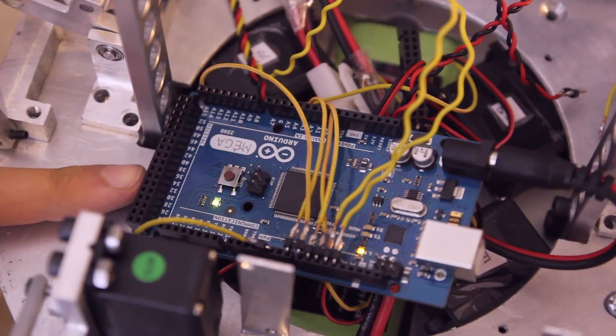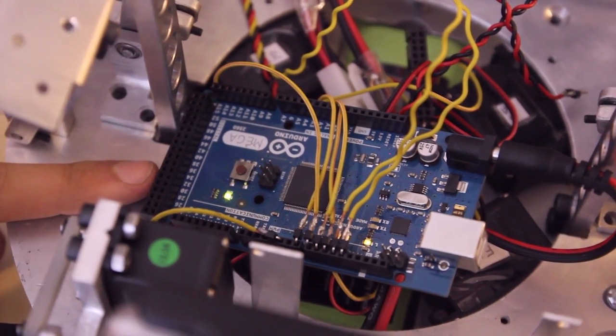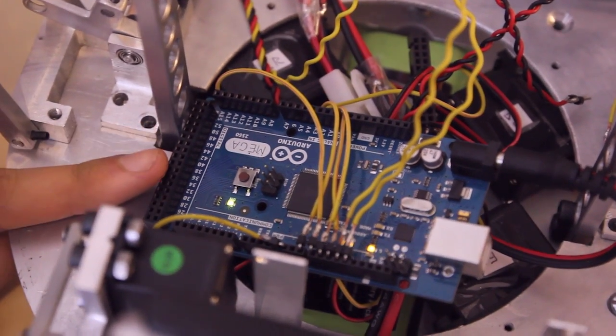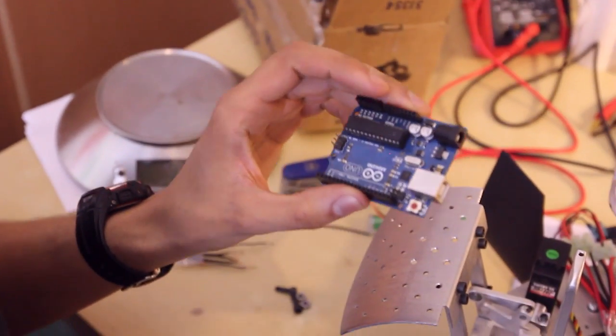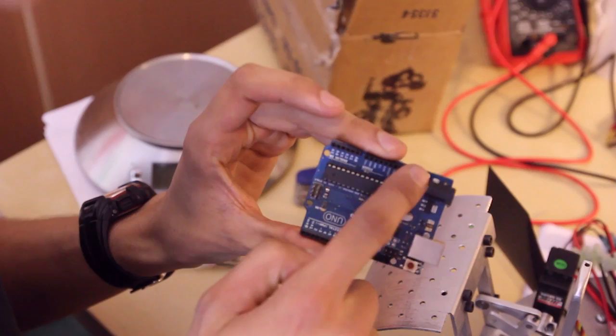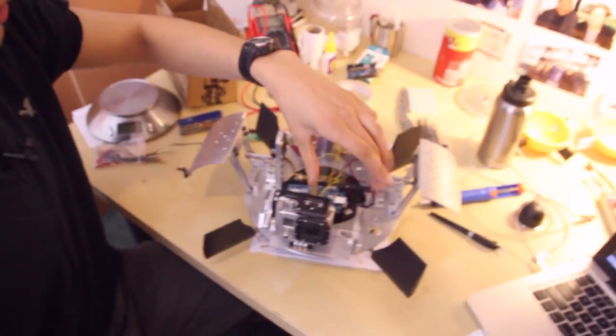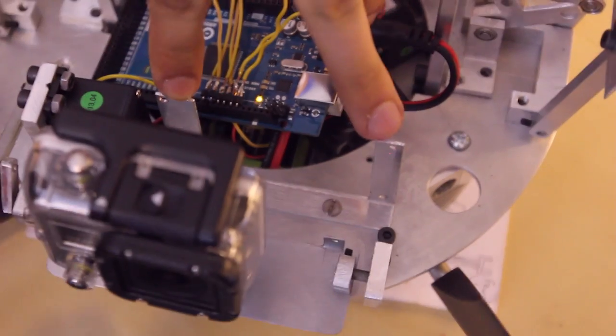This is our microprocessor that we're going to be using throughout the project. The reason we're using that and not the smaller version is we have so many different things to connect to it. We simply don't have enough pins on the small one. The Arduino is going to sit on these brackets here behind the camera.